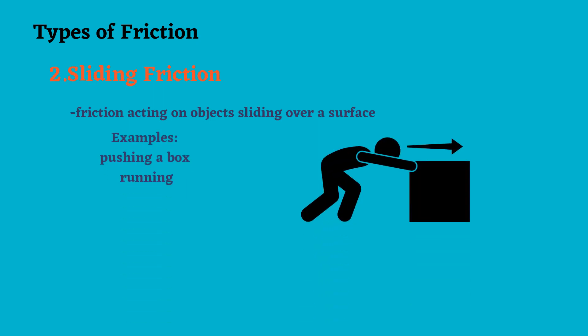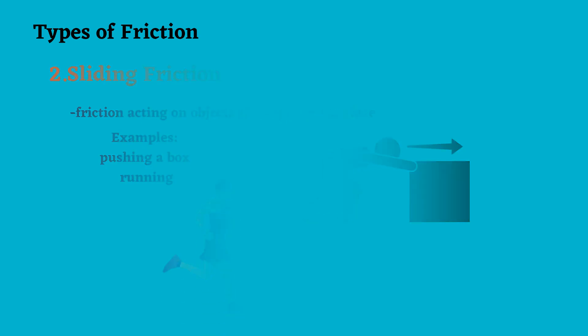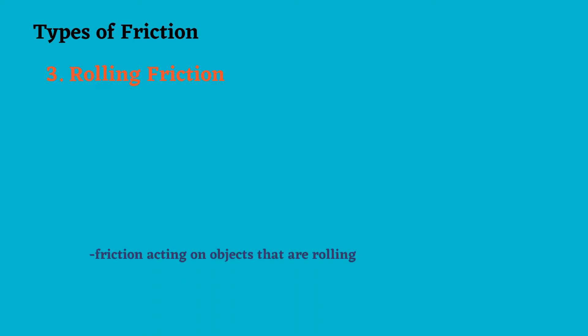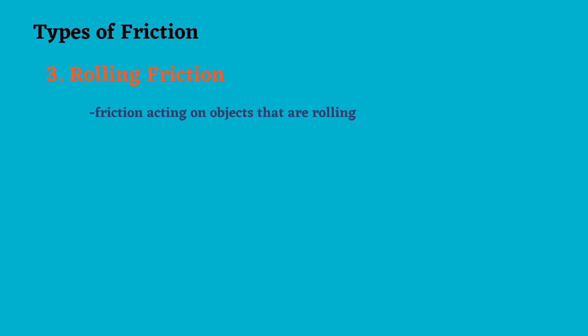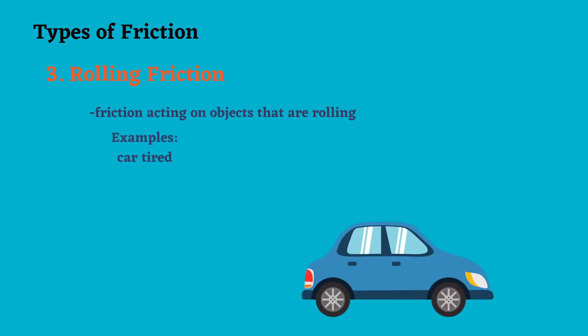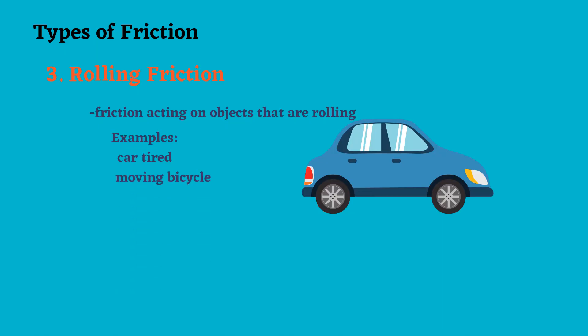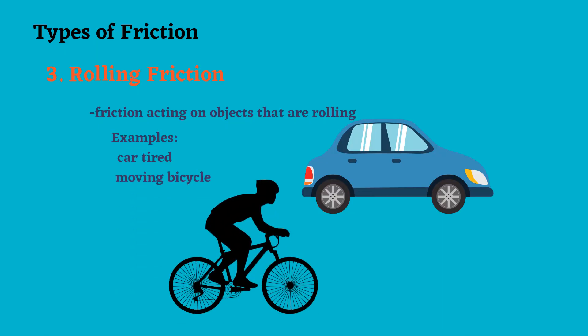The third type is what we call rolling friction — the friction acting on objects that are rolling. Examples: car tires and a moving bicycle.